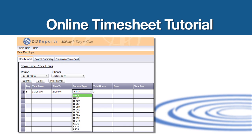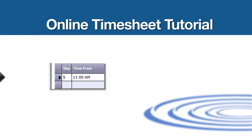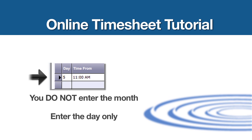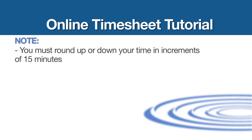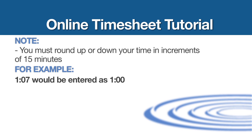Enter your time in the time card screen. If you worked on the 5th of January, you put 5 in the first box. You do not enter the month, only the day. Enter the time you started and the time you stopped working into the next boxes. Also please note you must round up or down in increments of 15 minutes. For example, 1:07 would be entered as 1 o'clock and 1:08 would be entered as 1:15, etc.